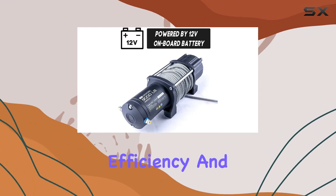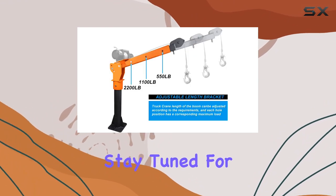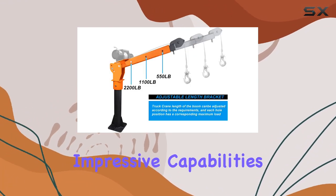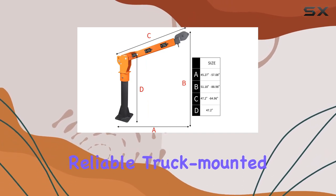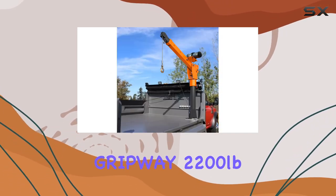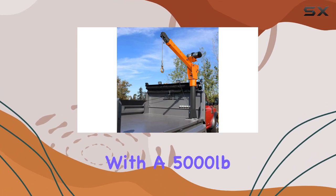Stay tuned for a demo of its impressive capabilities in action. If you're in the market for a reliable truck mounted bed crane, the Gripway 2200 pounds folding crane with a 5,000 pounds winch might just be the perfect addition to your pickup.